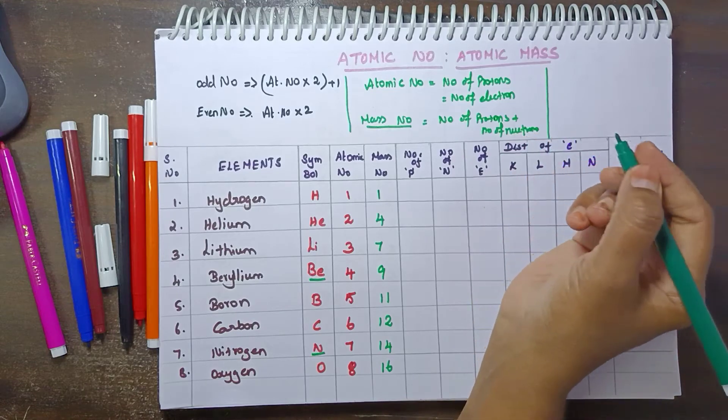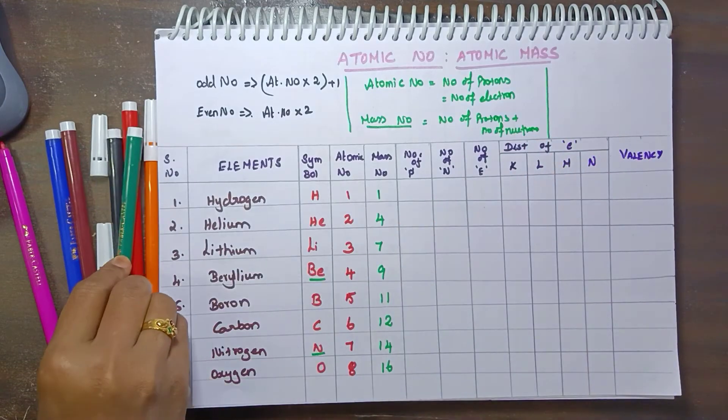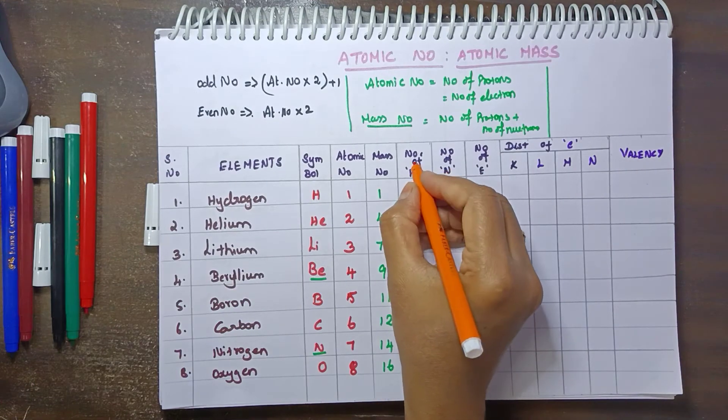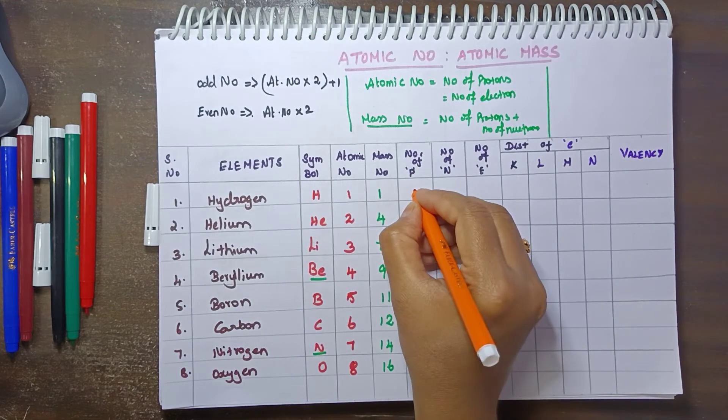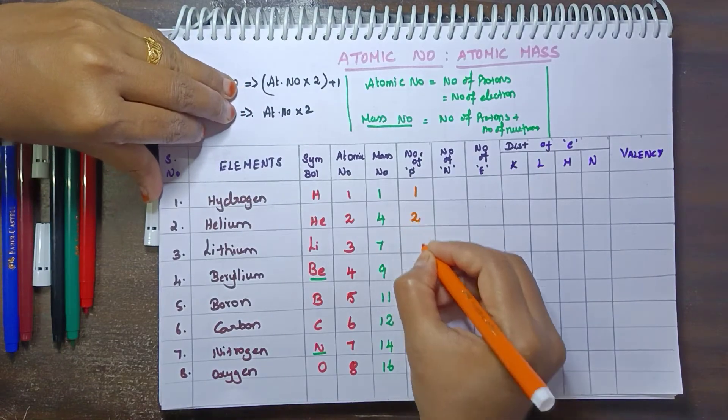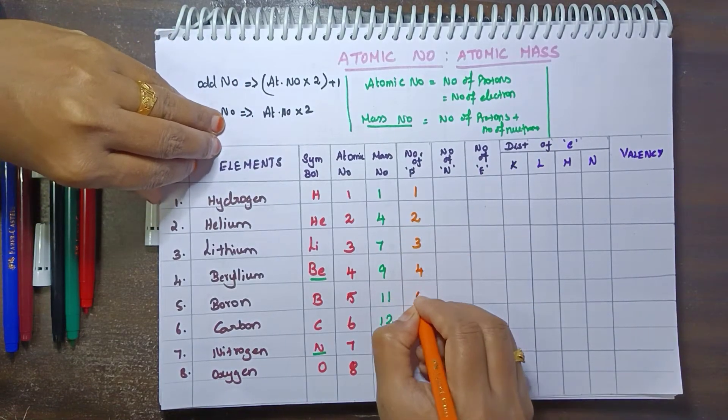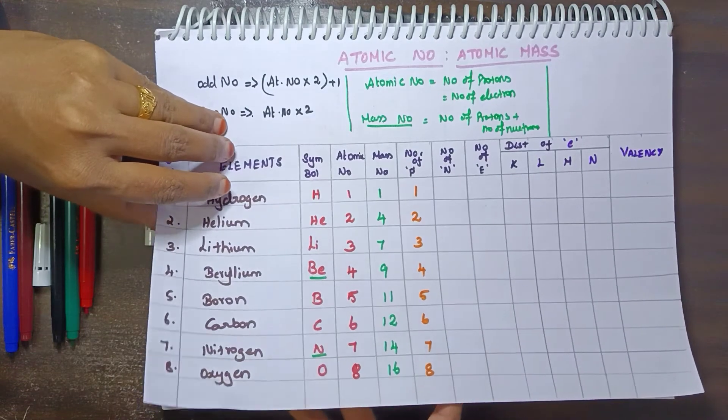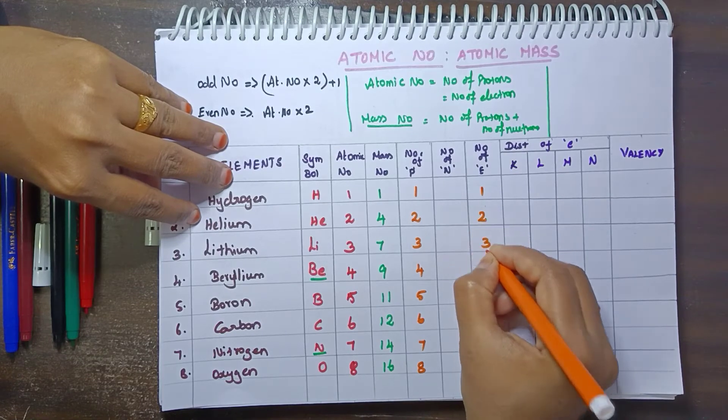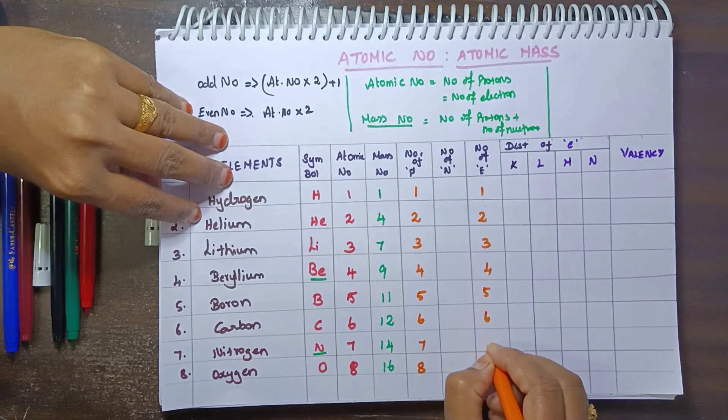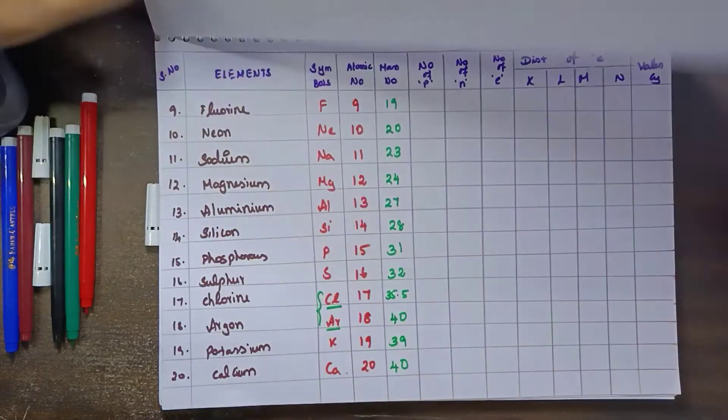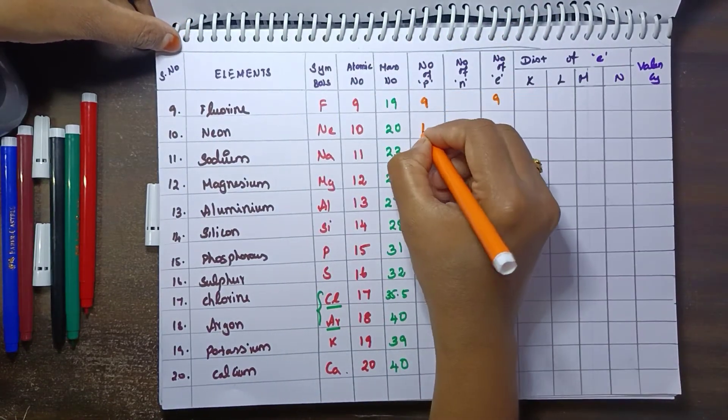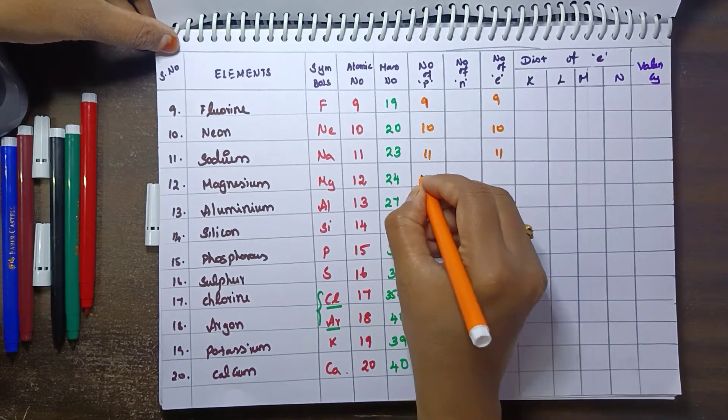You can identify the number of protons automatically by the atomic number. 1, 2, 3, 4, 5, 6, 7, 8, so electrons are equal 1, 2, 3, 4, 5, 6, 7, 8. You can see it, 9, 10, 11, 12.